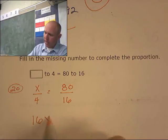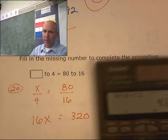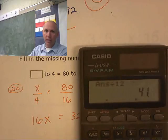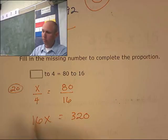But let's do down equals up anyways. Down is 16x equals up, which is 320. I'll divide both sides. I'll divide 320 by 16. What did I get? 20. Yay.